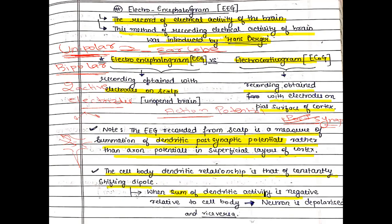Whenever the sum of the dendritic activity is negative relative to the soma, the neuron is depolarized. When the dendritic potential is positive as compared to the soma, the neuron is in a hyperpolarized state.